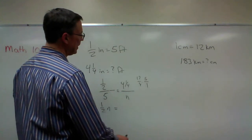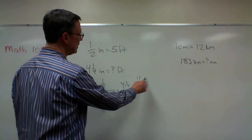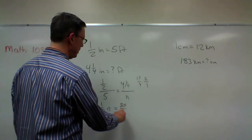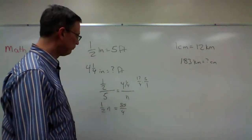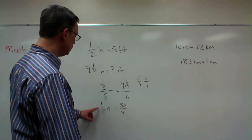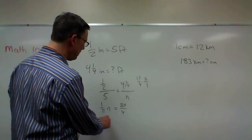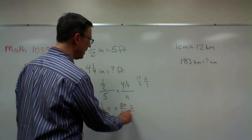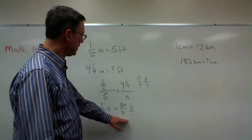And what would that be? 85 over 4. And then to solve it we need to get rid of this fraction. So we're going to divide by a half, which is the same as multiplying by 2 over 1.